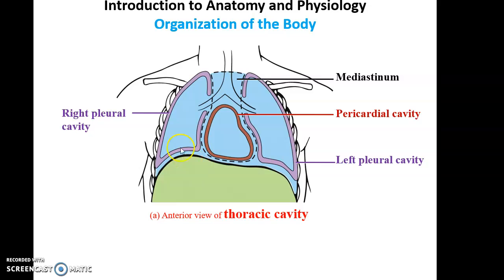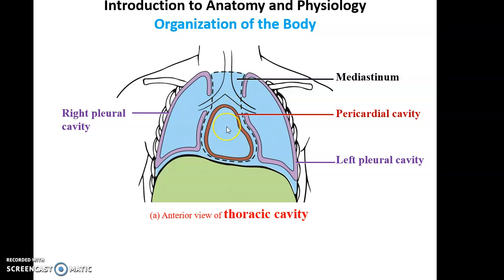When we look at the thoracic cavity, we can break it up into four smaller cavities. We have the right pleural cavity, where you find the right lung, and the left pleural cavity, where you find the left lung. We also have the pericardial cavity, where you find the heart. The space between the lungs is called the mediastinum, and the pericardial cavity is within the mediastinum.